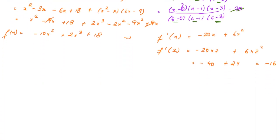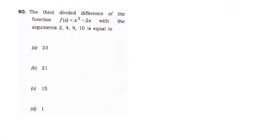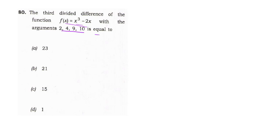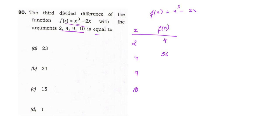Now we move to question 80, the last question of this paper. It says: find the third divided difference of f(x) = x³ − 2x with arguments 2, 4, 9, 10. Let us compute the f values: f(2) = 8−4 = 4, f(4) = 64−8 = 56, f(9) = 729−18 = 711, f(10) = 1000−20 = 980.